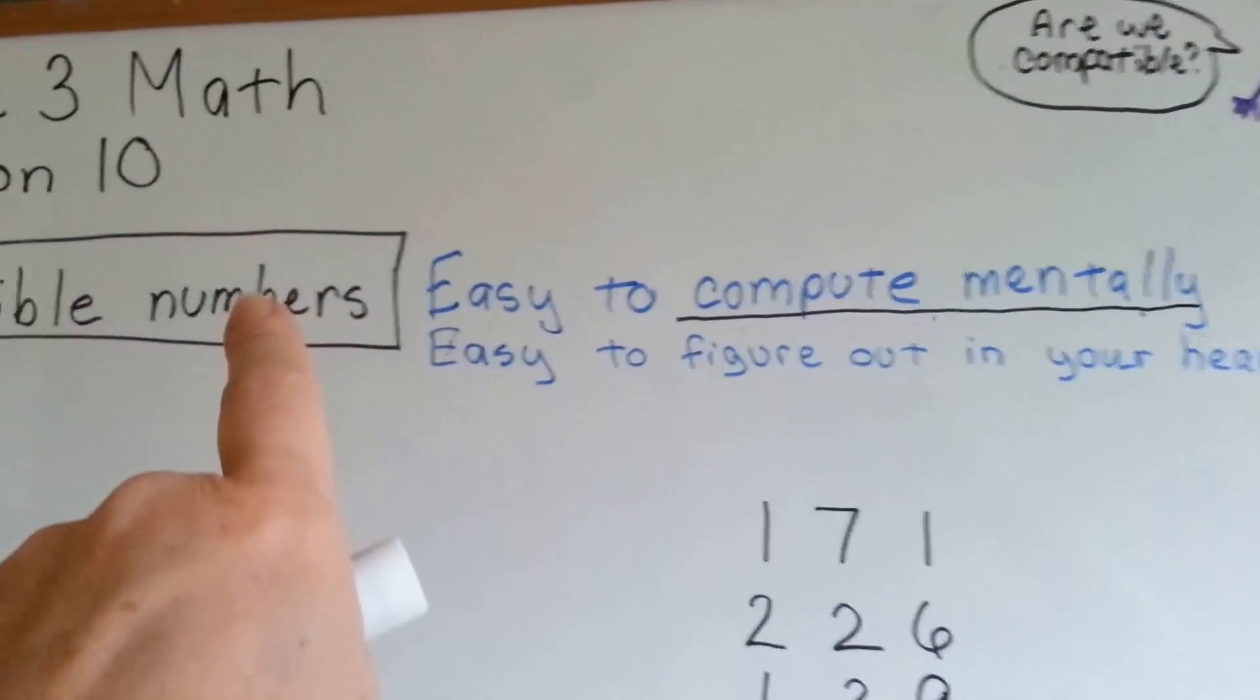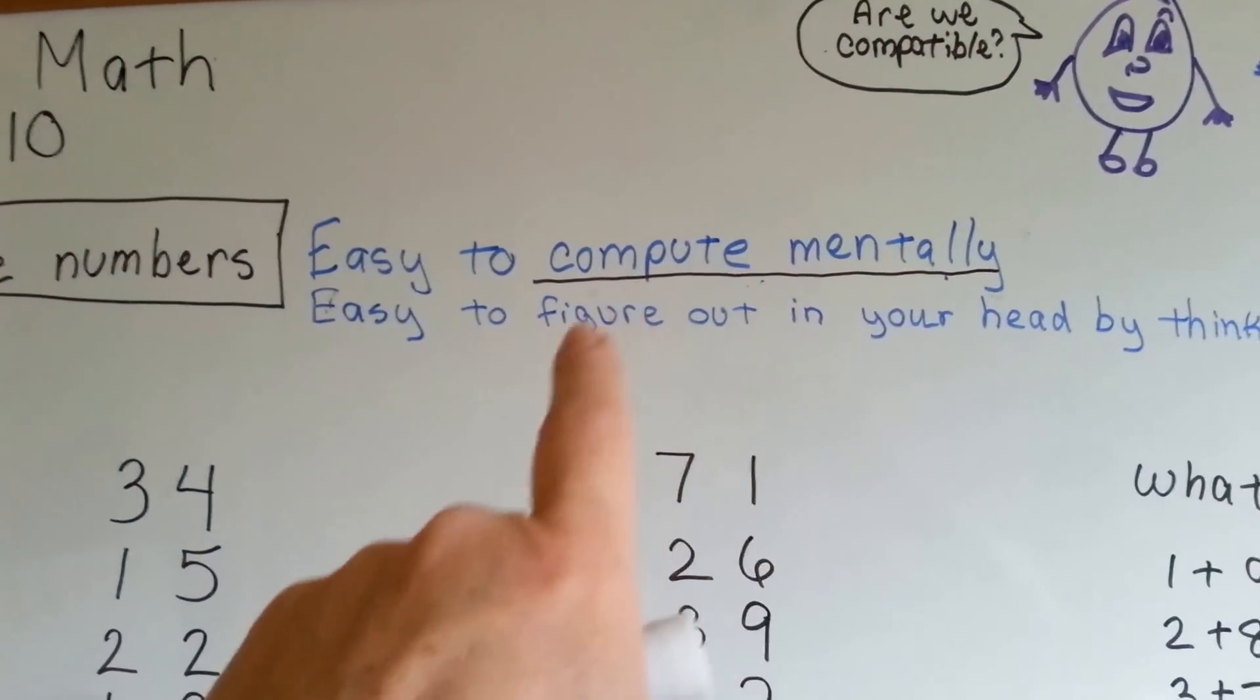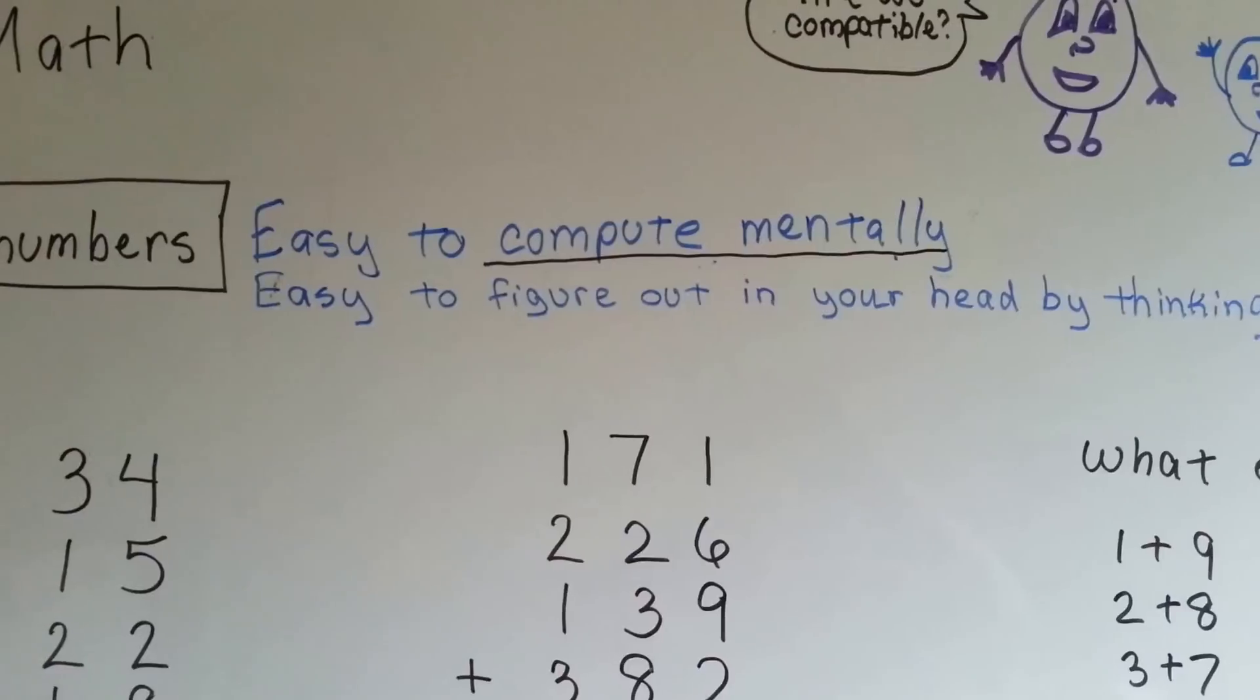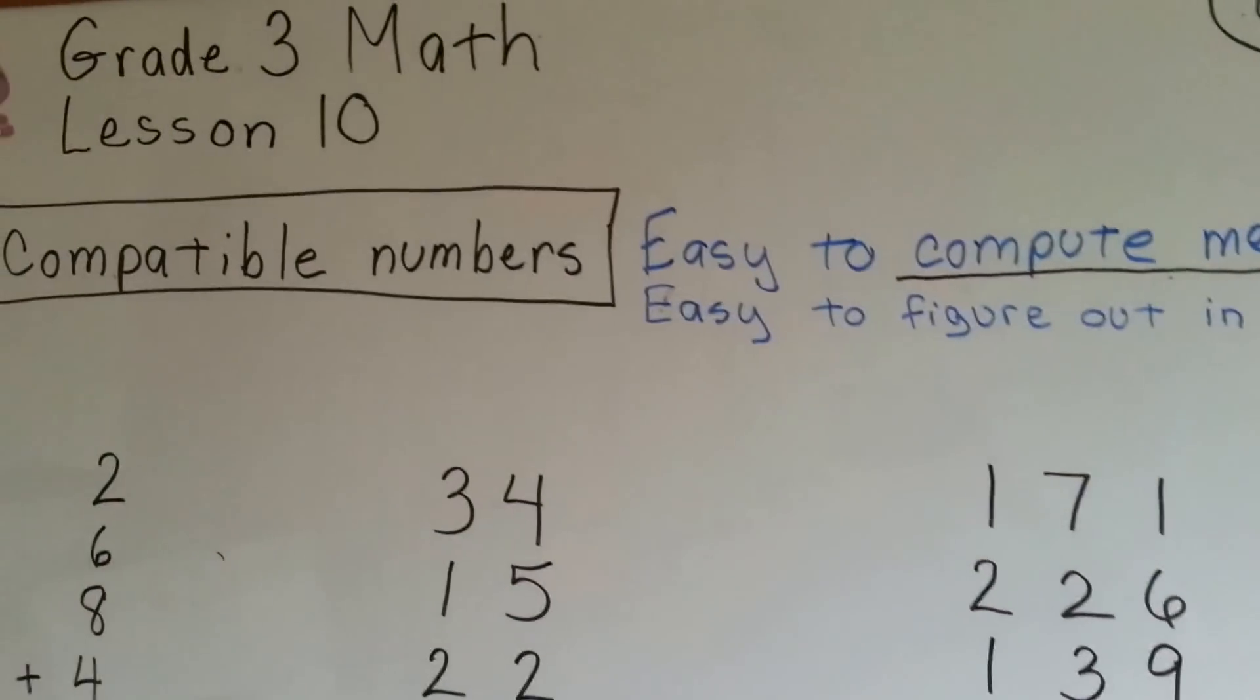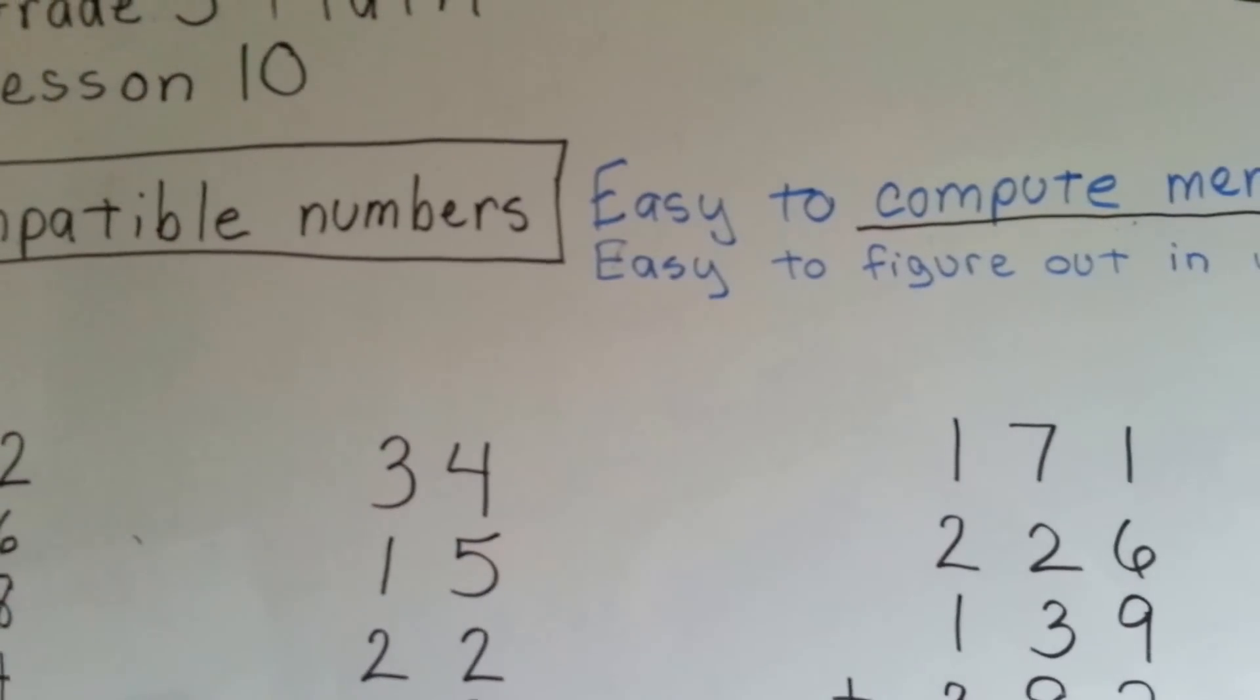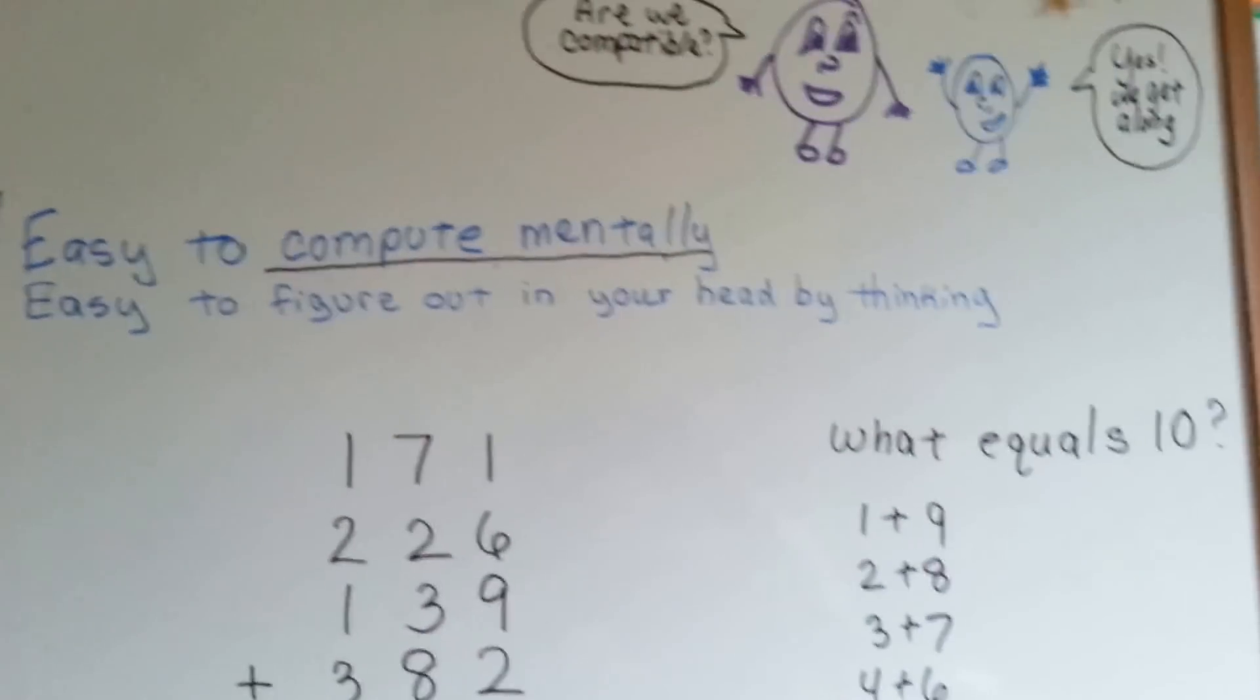Compatible numbers are numbers that are easy to compute mentally. Compute mentally, what does that mean? It means they're easy to figure out in your head by thinking of them. You could do math problems in your head if you imagine the numbers, and then you can figure it out. So let's see what are compatible numbers.